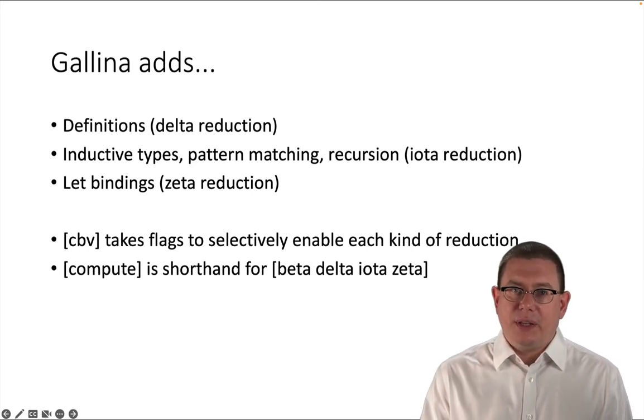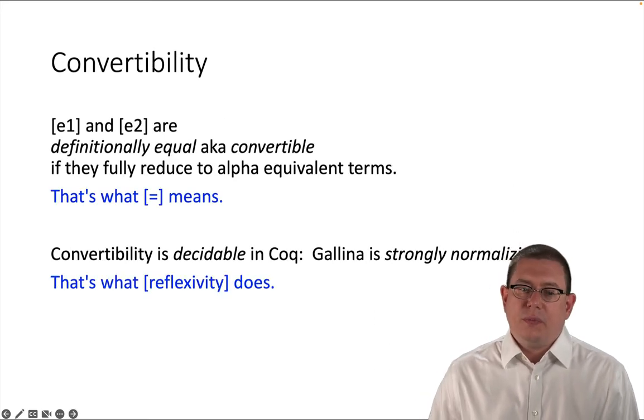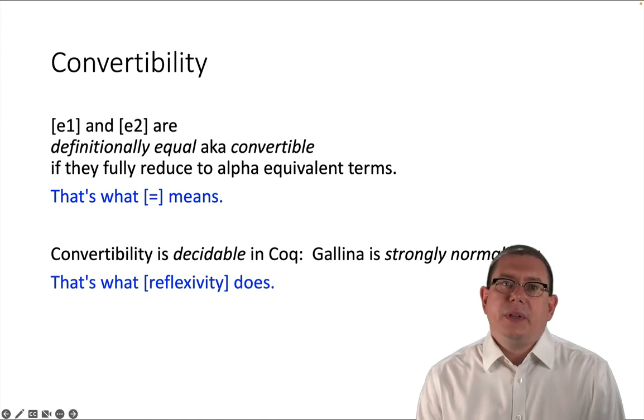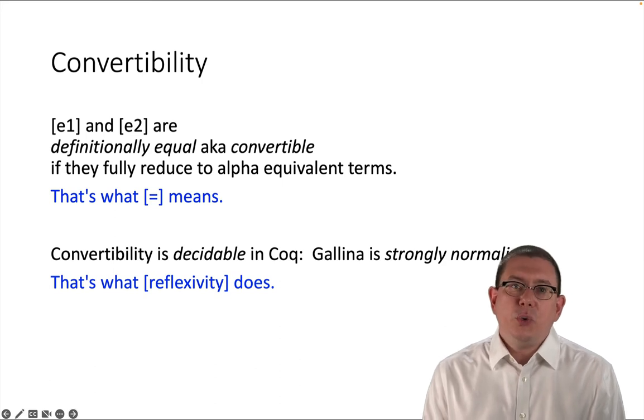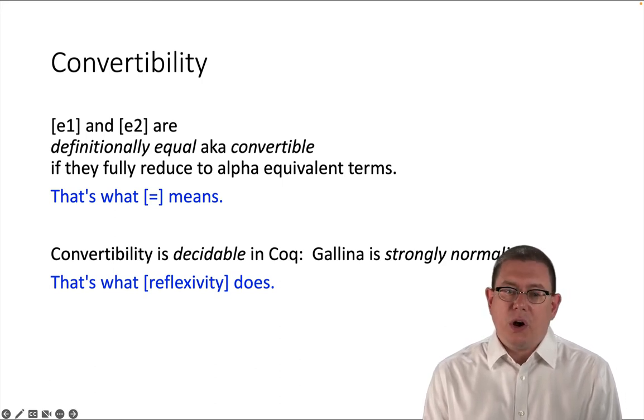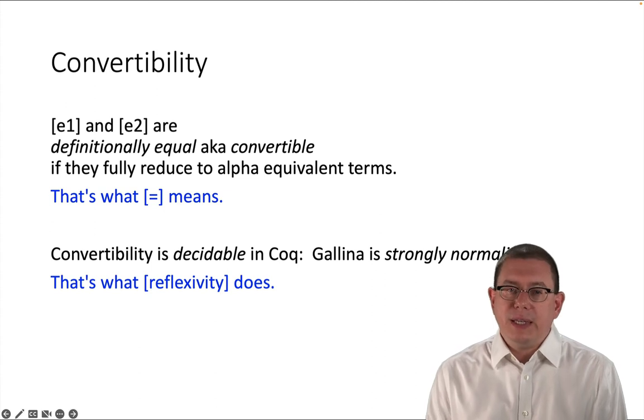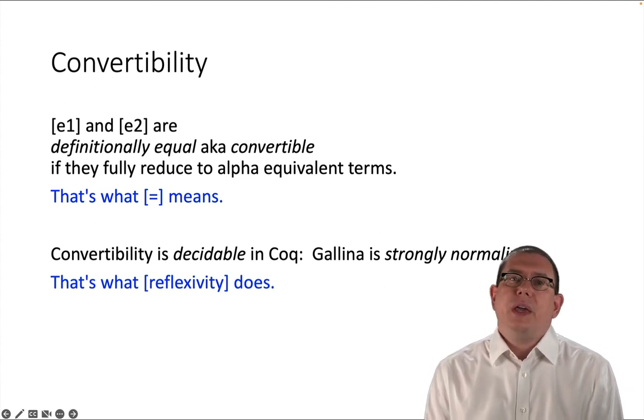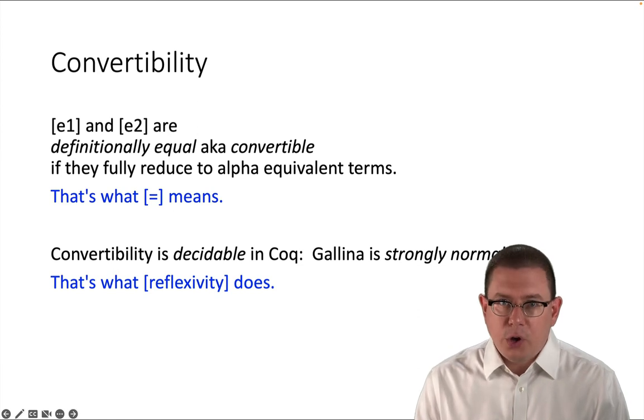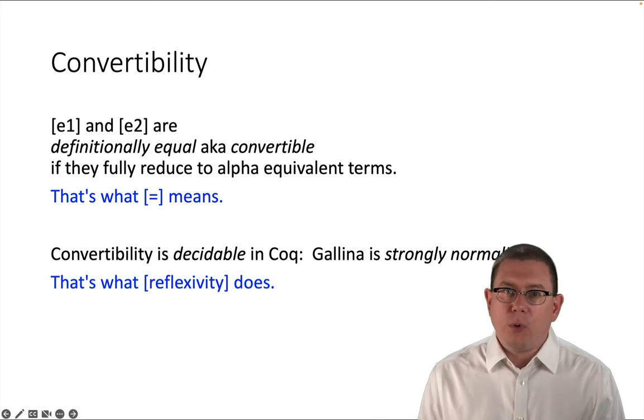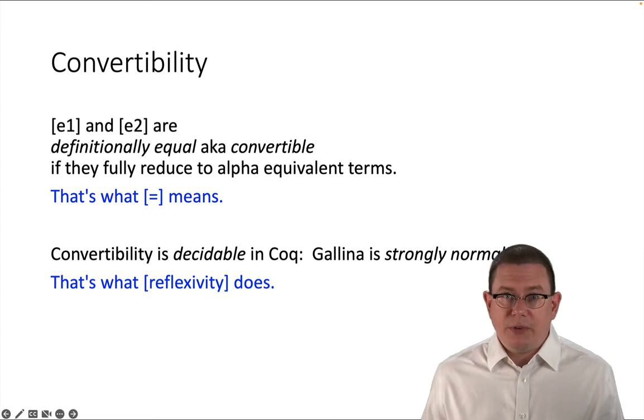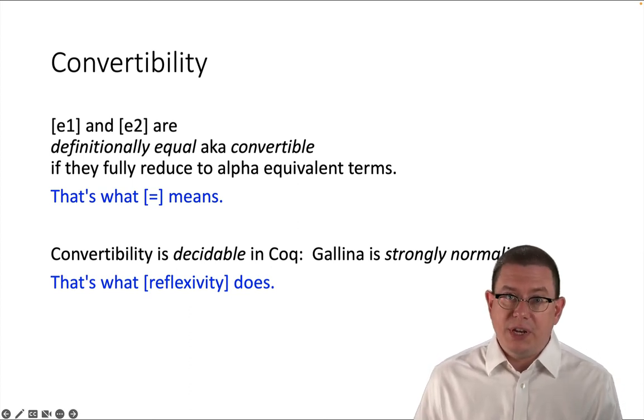Okay, so that's all of the reductions that Galena has that it adds on top of beta reductions from the lambda calculus. Now that we know about those, let's talk about one other technical concept. Stay with me here. Let's talk about convertibility. Two expressions, E1 and E2, are convertible, or another phrase for that is definitionally equal, if they fully reduce to alpha equivalent terms. Okay, so fully reduced here means that you've enabled all four of those kinds of reductions, beta, delta, iota, and zeta. And we know what alpha equivalent means. It means the same up to renaming consistently.